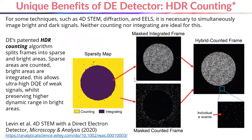For some techniques such as 4D STEM, diffraction, and EELS, it's necessary to simultaneously image bright and dark signals in the same frame. Neither counting mode nor integrating mode are really ideal for this task. That's why DirectElectron created what we call our HDR counting algorithm — a patented technique uniquely available on our detectors. The HDR counting algorithm splits the frames into sparse and bright areas, allowing very low noise results in the dark areas while still recording strong bright intensities in the brighter areas. This technique was explained in an article called '4D STEM with a Direct Electron Detector' published in Microscopy and Analysis in 2020.